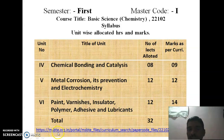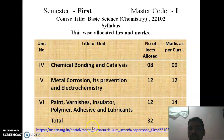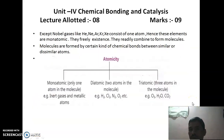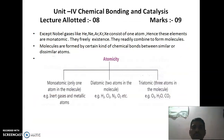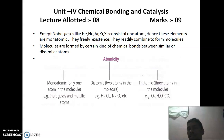The syllabus link is msbte.org.in — portal, MSBTE file, curriculum search, paper code 22,102. Now I am going to start Unit 4, Chemical Bonding and Catalysis, which is allocated 8 hours and 9 marks.